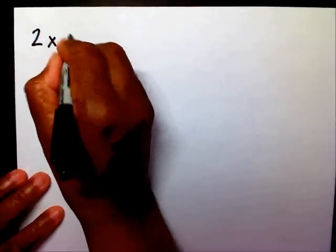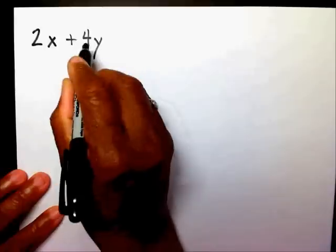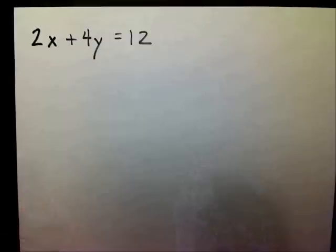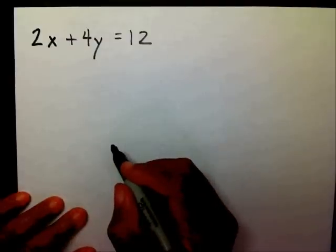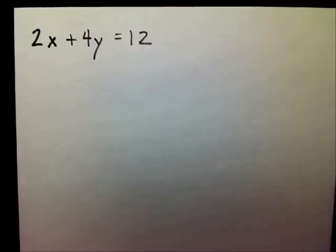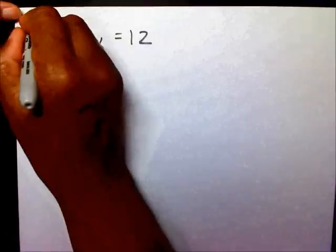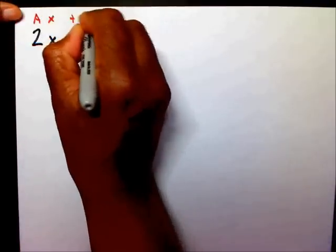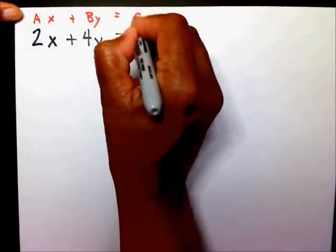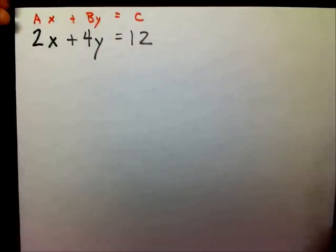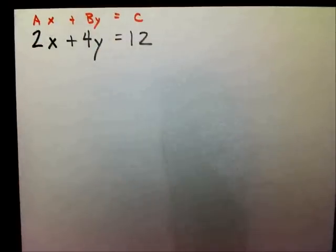So let's find the first one. If I gave you 2x plus 4y equals 12, since this is in standard form — and the reason why this is in standard form is because you have your ax plus by equals c — what I'm going to do is solve two equations.